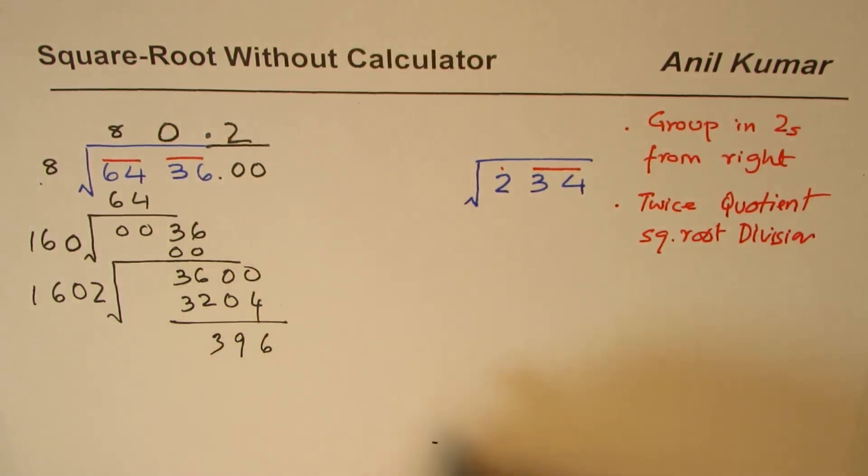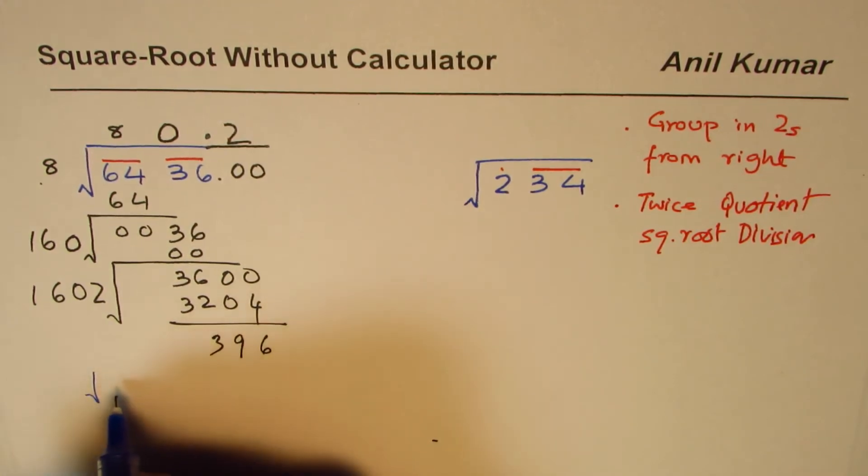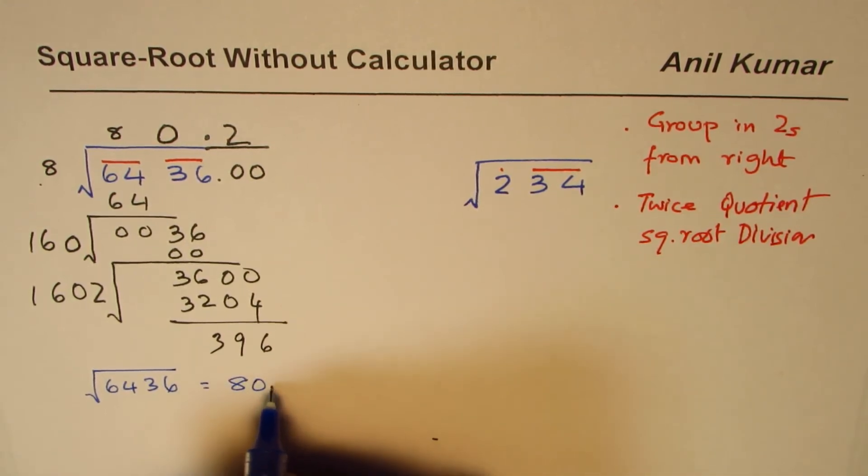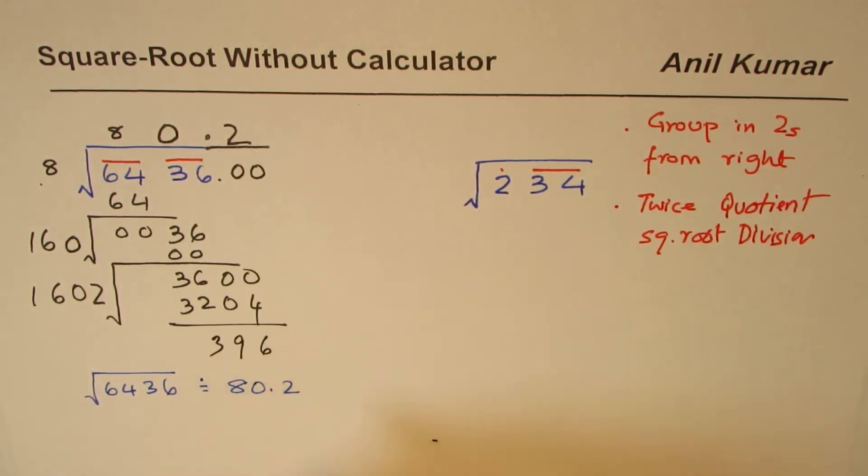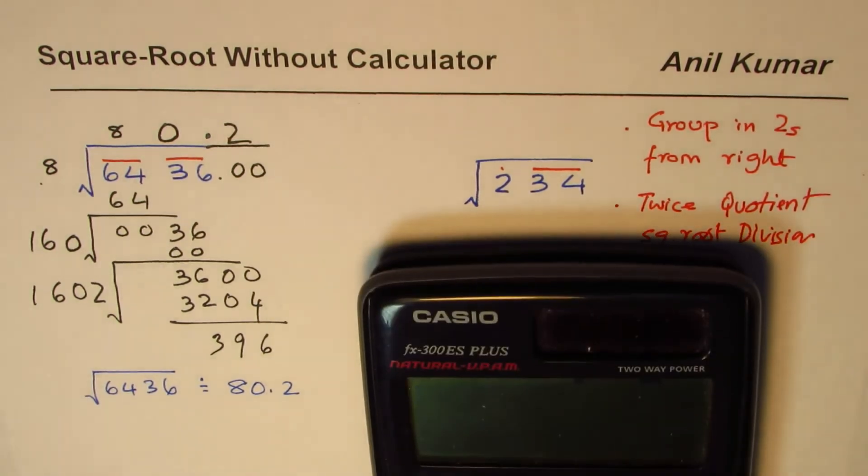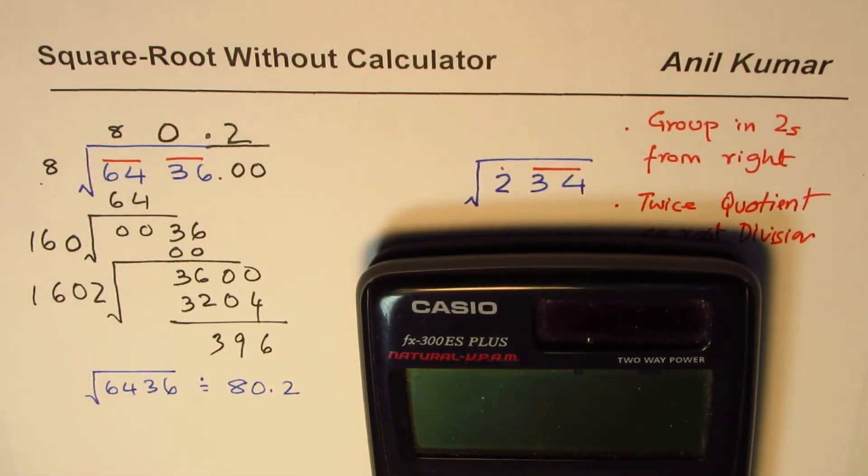We do have an answer here. We can write down that the square root of 6436 is equal to 80.2. This answer is correct to one decimal place. Let's figure it out - we can use the calculator and check. Square root of 6436 is equal to 80.22, so we're absolutely correct.